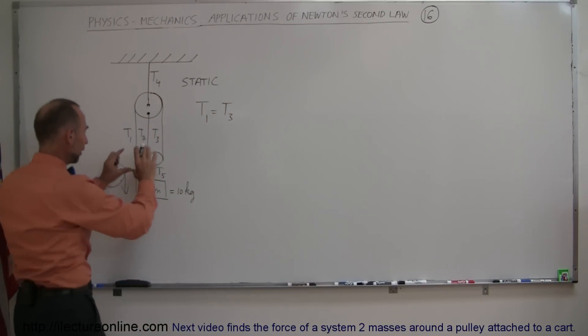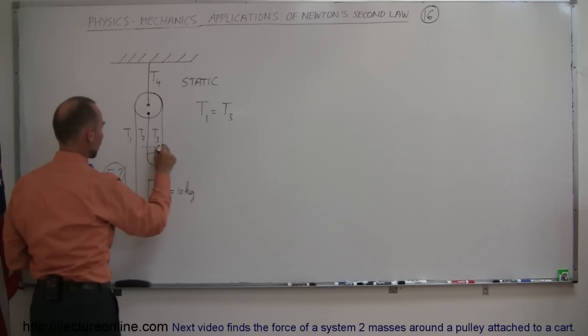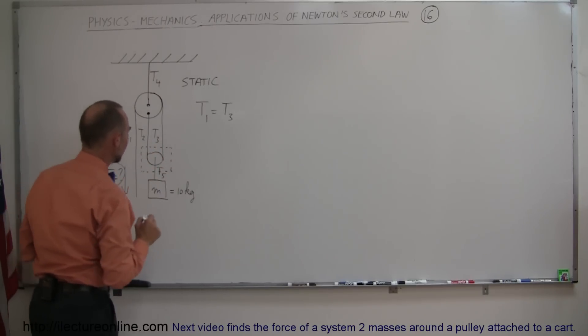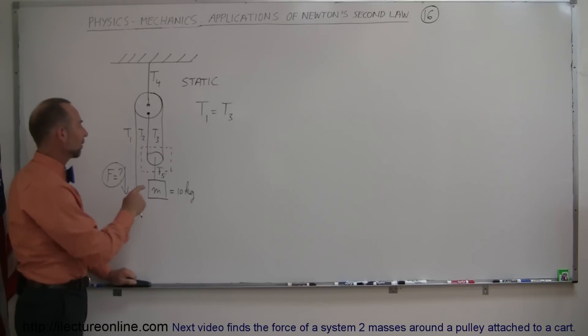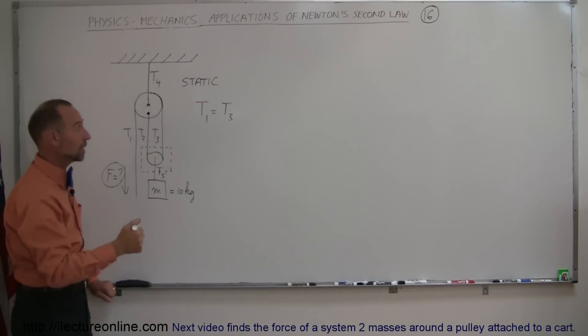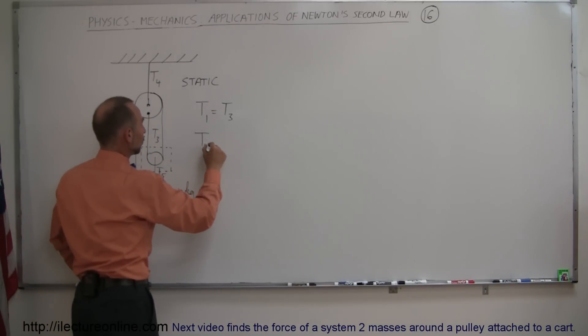Then we can look at this pulley right here. Let's draw a little box around it like so and then we can look at that. Notice that for T2 and T3, it's really one string that goes around this pulley. The distance from the center of the pulley to there is the same as the distance from there to there. If that's the case then T2 and T3 must also be equal to each other. So we can say T2 is equal to T3.